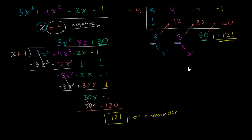So hopefully you see the connection. Because we are assuming that we're dividing by x plus or minus something, we're able to make some simplifying assumptions. Whenever you divide this by an x, you know it's going to have the same coefficient, just one degree lower. Same coefficient, one degree lower. And we kept doing that, so it allowed us to do it a little bit simpler, a little bit faster, and using less space.